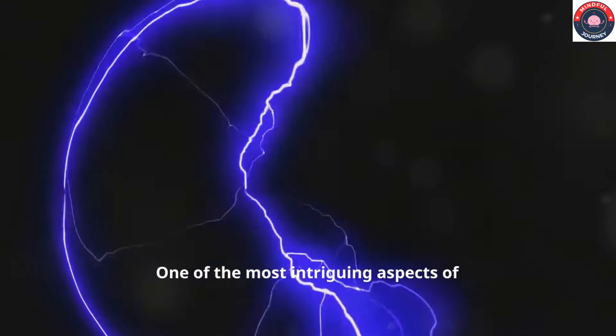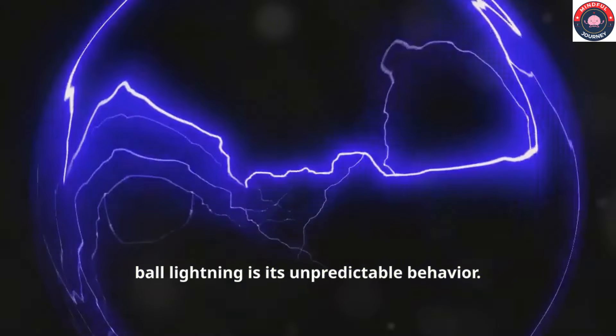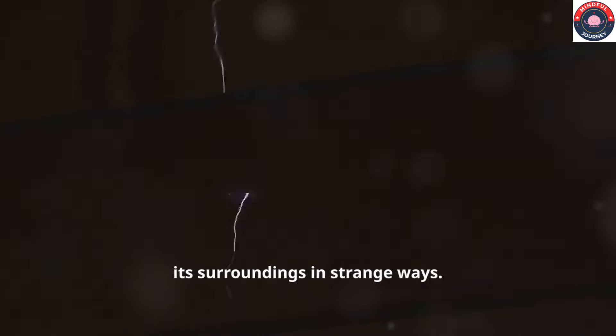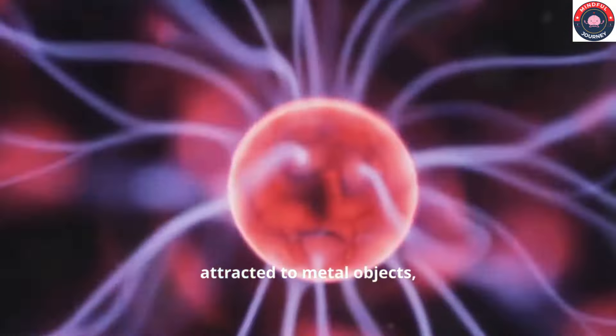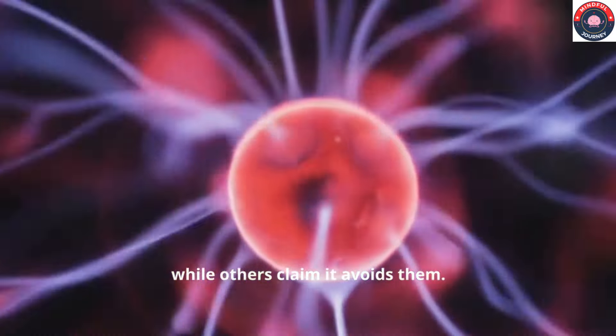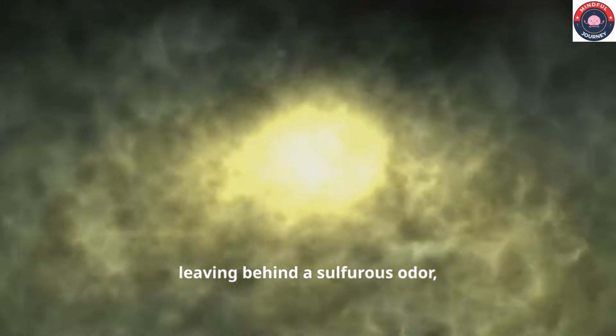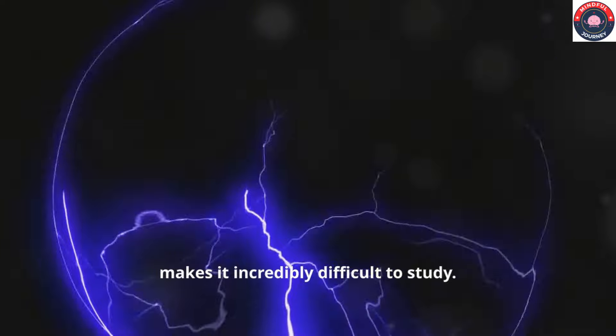One of the most intriguing aspects of ball lightning is its unpredictable behavior. There are reports of it interacting with its surroundings in strange ways. Some witnesses describe it as being attracted to metal objects, while others claim it avoids them. There are accounts of ball lightning leaving behind a sulfurous odor, further deepening the mystery. This unpredictable nature, coupled with its rarity, makes it incredibly difficult to study.